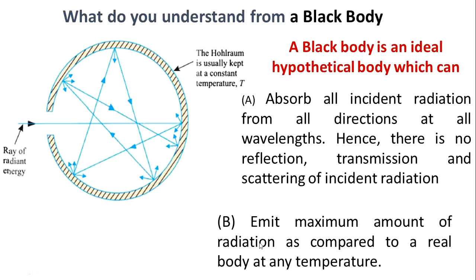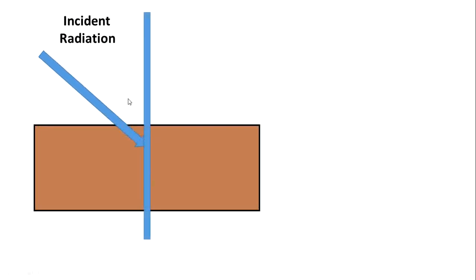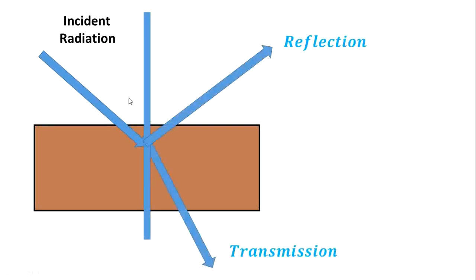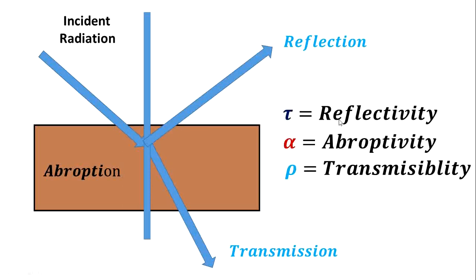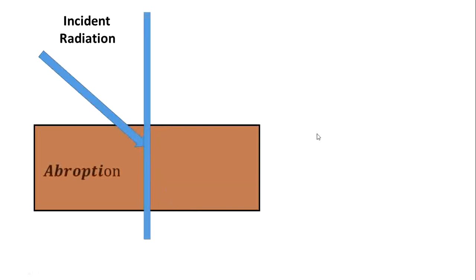A black body emits the maximum amount of radiation compared to a real body at any temperature. For a normal body, incident radiation is split into reflection, transmission, and absorption. The total radiation falling on the body, the ratio of reflected to total is reflectivity. For a black body: transmissivity tau equals 0, reflectivity rho equals 0, and absorptivity alpha equals 1.